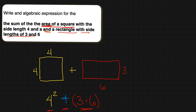Use your strategies when reading these problems. Underline the things that are important — I'm finding the sum, so I look for that first. Then I know there will be two or more things: the first was the area of a square, so I wrote 4 squared; the other was a rectangle, so I wrote 3 times 6. They gave details for each one — side length 4 for the square, and dimensions 3 and 6 for the rectangle. So our expression is 4 squared plus 3 times 6.